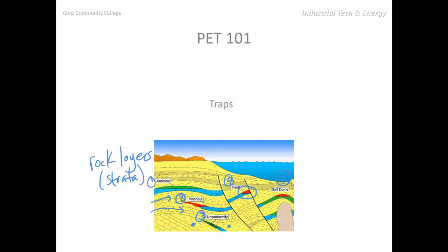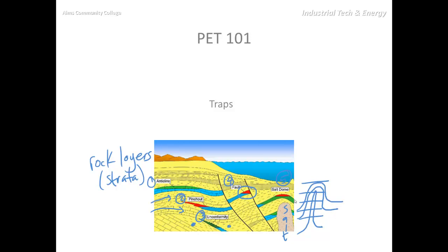A salt dome is an accumulation of — wait for it — salt. And it simply pushes upward, taking what might otherwise be some horizontal layering of rocks. As that salt dome is created and pushes up, it warps the rocks above it, and so we end up with a salt dome.